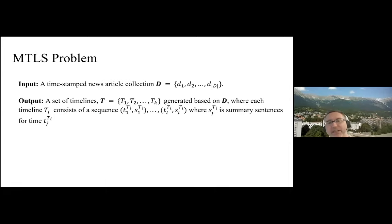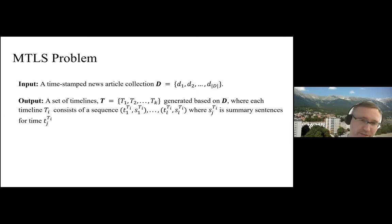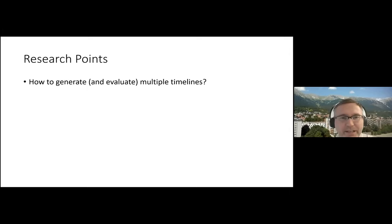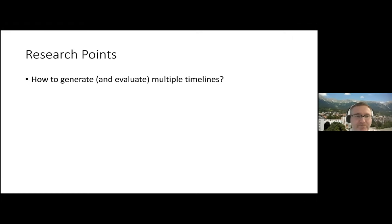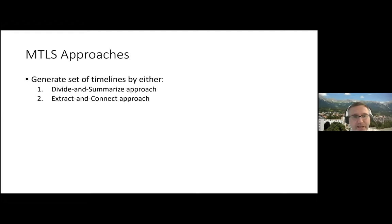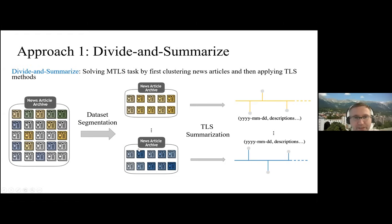Multi-timeline summarization is a more generic form of timeline summarization: from an initial input document collection we generate a set of timelines, each timeline can have a different length, and the timelines should be different from each other. The questions are: how to generate such multiple timelines, what kind of approach could be used, and how to evaluate multiple timelines created from one input collection. We see two possible approaches: a divide-and-summarize approach and an extract-and-connect approach.